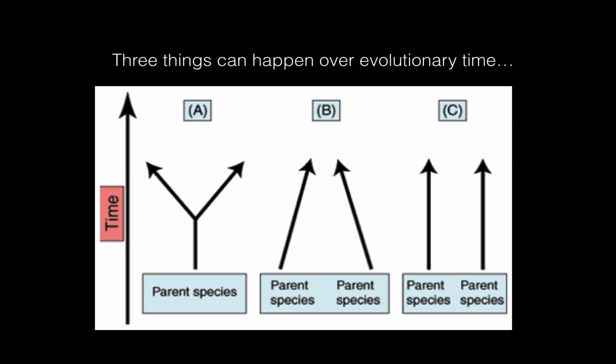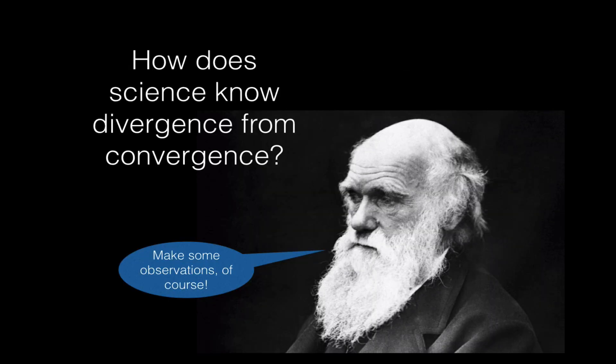Another thing that could happen over evolutionary time is two unrelated ancient or parental species can evolve to look more and more alike. This is called convergent evolution, and in this case, you're going to end up with two species, for example in present day, that really strongly resemble each other, and this might lead you to think that they're related to each other, but that's not true. And finally, the third thing that could happen, which we're not really interested in today, is when the original species don't change much over time, and pretty much retain their ancient or older characteristics through evolutionary time. So how does science know divergence from convergence?